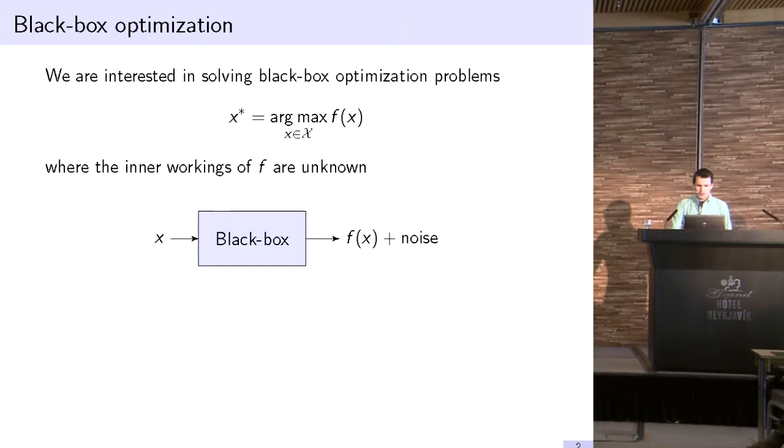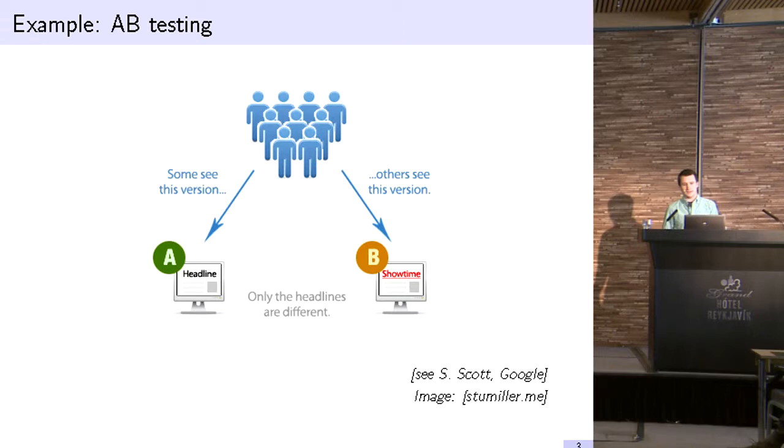One typical modern application is A-B testing. This is just a new name for an old idea, used by Google and various other companies to modify how they tailor their websites to customers. You take a small subset of your customers and show them different variations on your parameters, like varying the words, colors, or fonts. Then you look at the actual outputs like click-through rates or whether they purchase your products. That purchasing information corresponds to the f in the black box setting, and the x's are the different parameters we're varying.